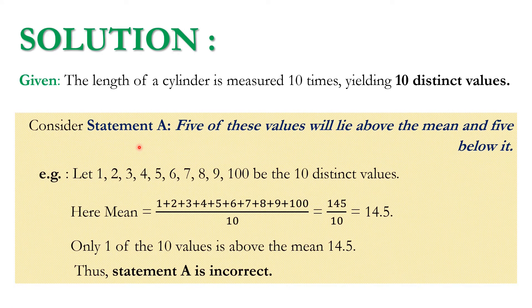In statement A, it is said that 5 of these values will lie above the mean and 5 below it. Let us consider 10 distinct values namely 1, 2, 3, 4, 5, 6, 7, 8, 9, and 100. The mean of these 10 values equals 145 by 10, that is 14.5.